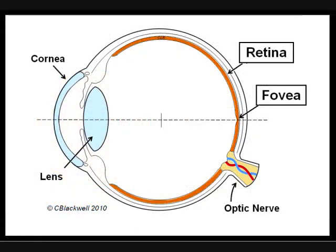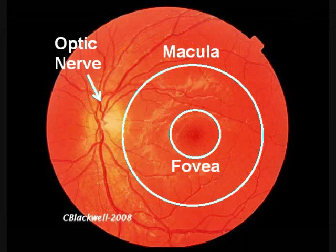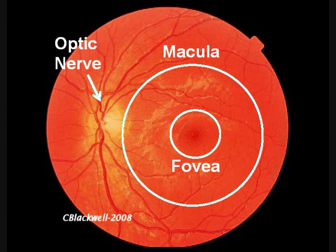The retina is a layer of nerve tissue lining the inside of the eye. It functions like film in a camera. If we look through the pupil into the inside of the eye, on the left the arrow points to the optic nerve. You can see arteries and veins branching out from the middle of the nerve. The outer white ring denotes the macula, the part of the retina responsible for good central vision. The inner ring denotes the fovea, which has the best fine detail vision.